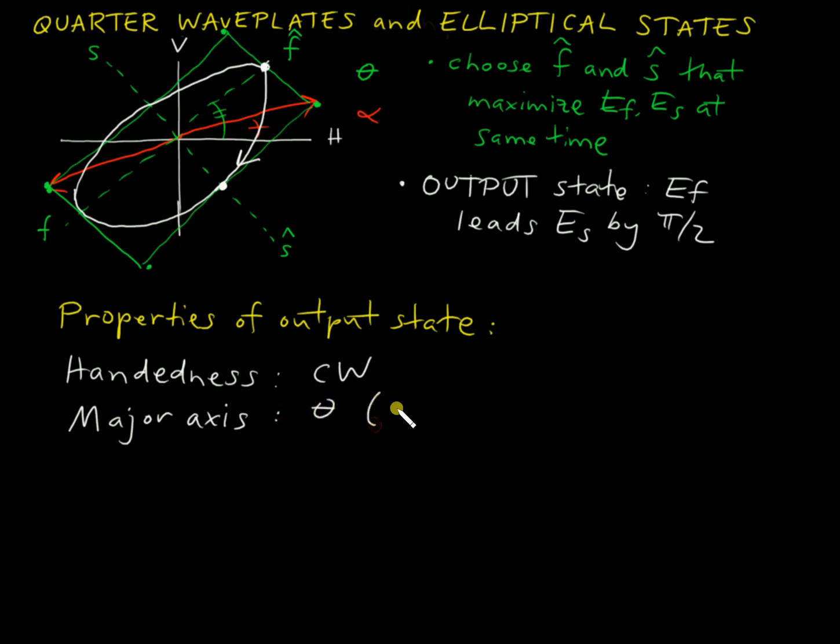I'll make a note for you that sometimes it's perpendicular to that. That's just saying the major and minor axes line up with the axes of the waveplate. That's always the case. Sometimes the major axis is F, sometimes the major axis, the larger projection electric field is on S.